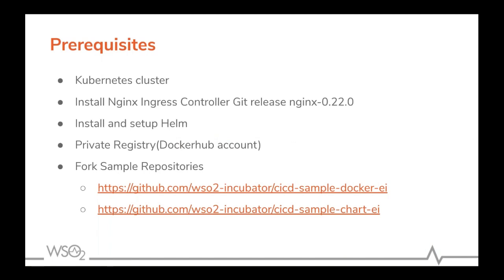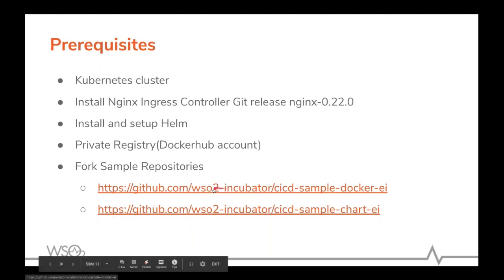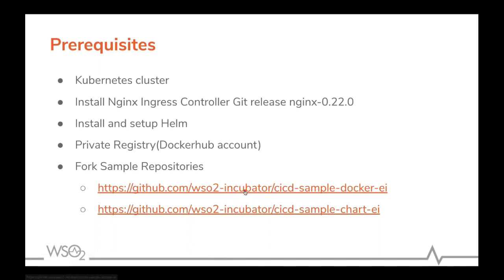This cluster needs to have an NGINX ingress controller installed, and we have tested the current pipeline with version 0.22. You will also need Helm since we are using it as the deployment manager. You will need a private registry to store your custom images built on top of the WSO2 base image — in this case we are using a Docker Hub account. Additionally, you have the chart source repository and artifact source repository; you can fork these two repositories to trigger builds with your own changes.